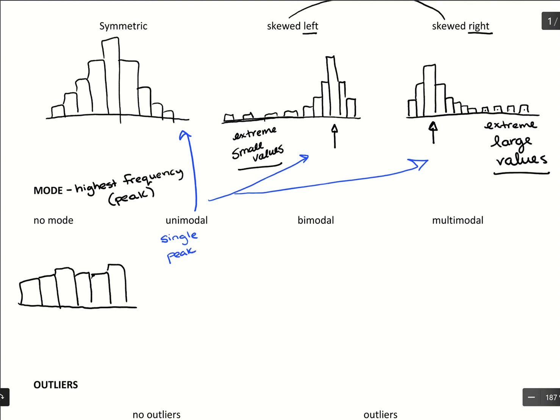And bimodal is going to look like where we have our graph. It raises up to a peak, decreases out, and then rises to another peak and decreases out.